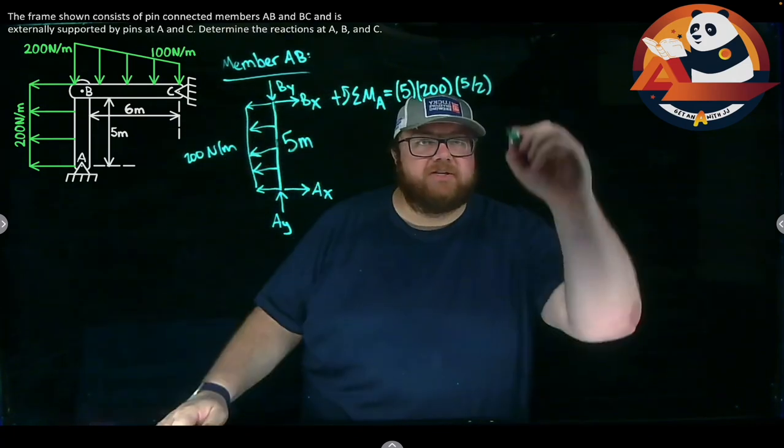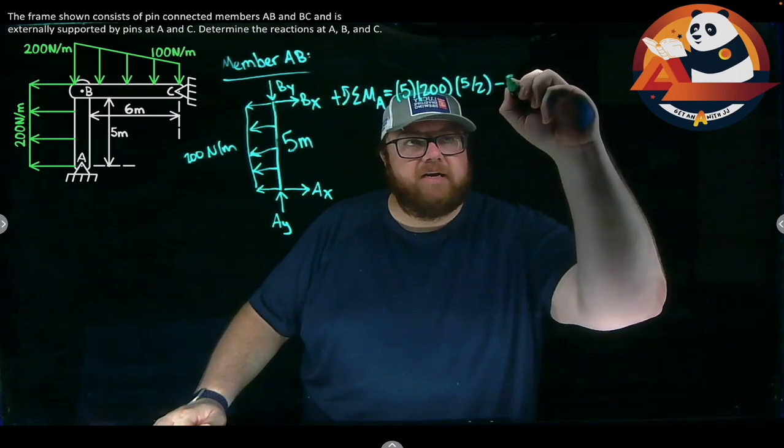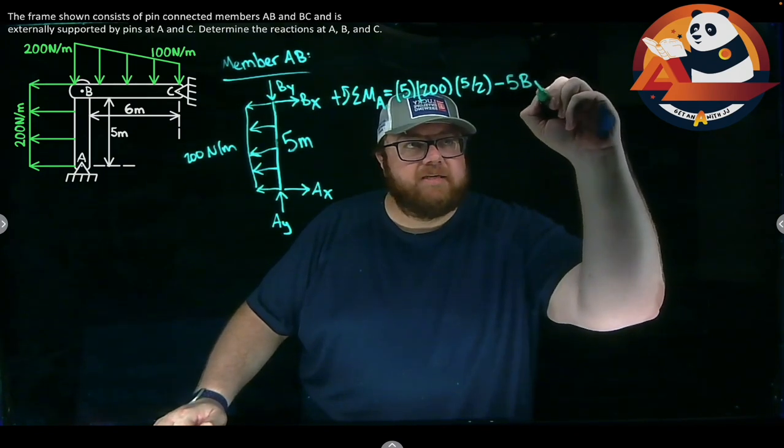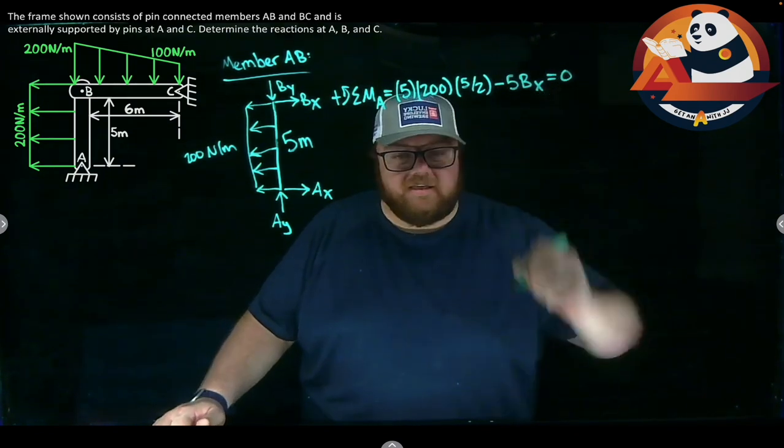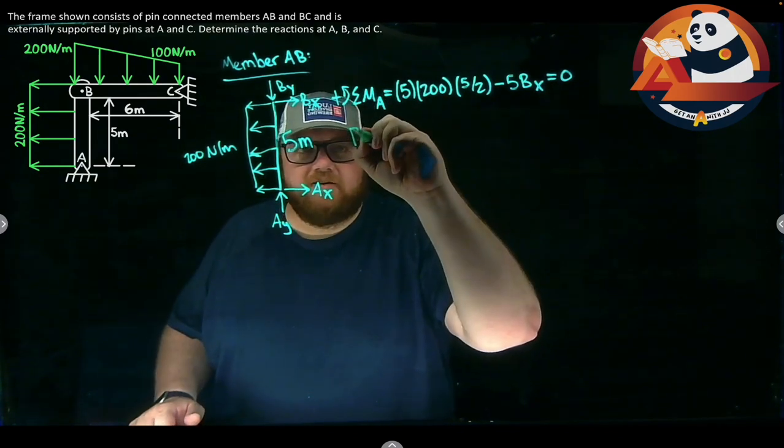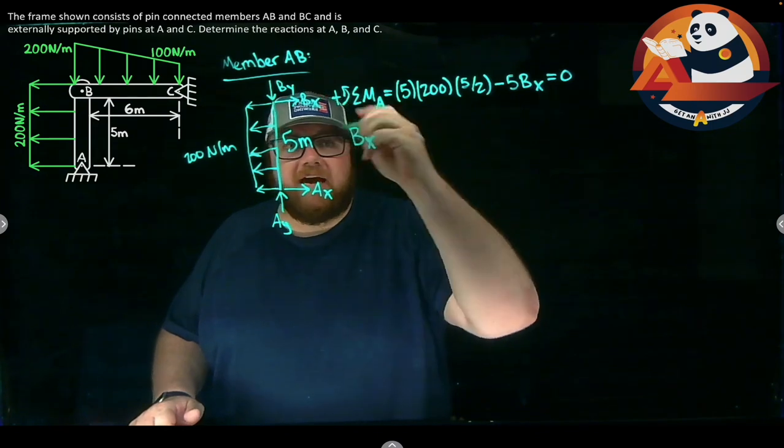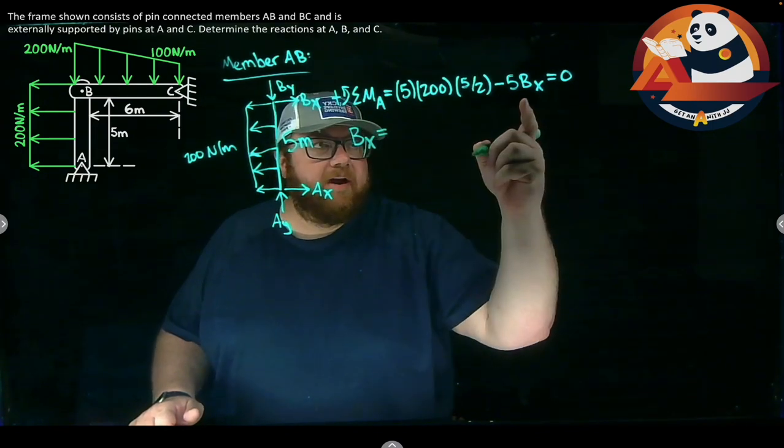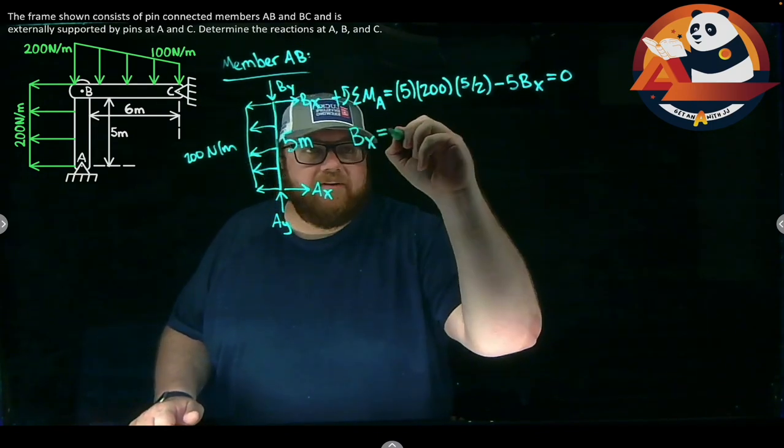BX will cause a clockwise rotation. So I can subtract that out. Minus 5 BX gets us to zero, which I can solve for BX. I'll get a positive number out, which means I guess the right direction in my free body diagram. BX is 500 Newtons.